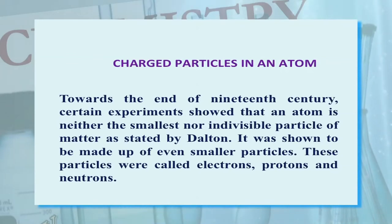Then we will take up various atomic models proposed on the basis of these discoveries. We will discuss how various models of the structure of atom were developed and explain the success as well as the shortcomings of these models. This will be followed by a description of the arrangement or distribution of electrons in the atom, which is known as electronic configuration.